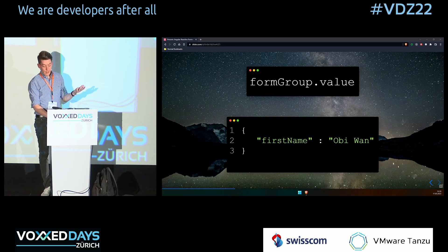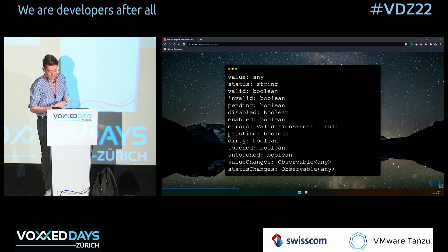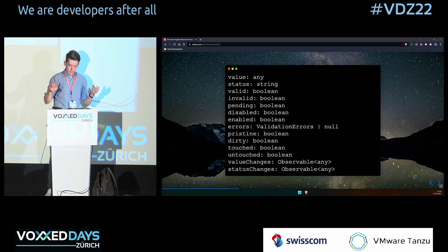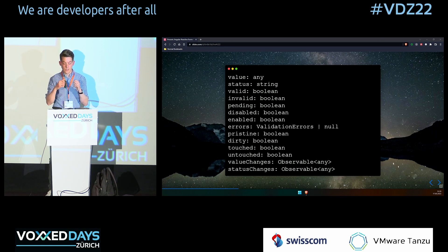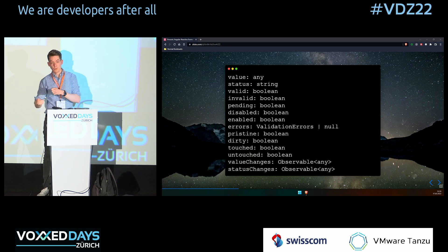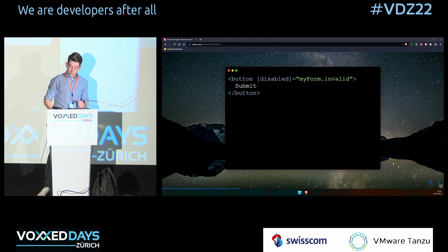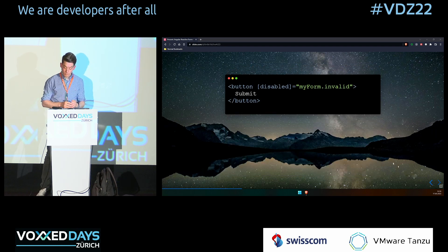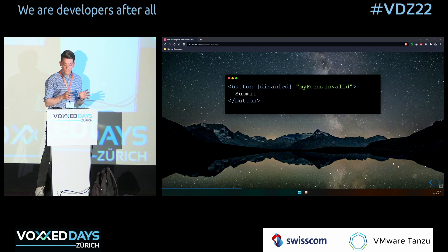The FormGroup also implements AbstractControl, so it has all those values — valid, invalid, touched, untouched, pristine, dirty, and so on. Just keep in mind you're at a FormGroup level — a FormGroup is dirty if one of its children is dirty, so it cumulates up. A common pattern is binding a button's disabled property to whether the form is invalid. But please pay attention: this button will also be enabled in the pending state.